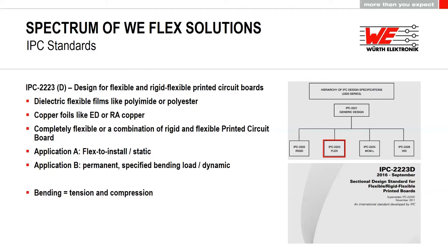The IPC also describes completely flexible or combined rigid and flex printed circuit boards. Most important is the application: one is flex-to-install, called static, and the other is dynamic — permanent bending. Dynamic bending always involves tension and compression: tension on the outer radius and compression on the inner radius of the flex part.